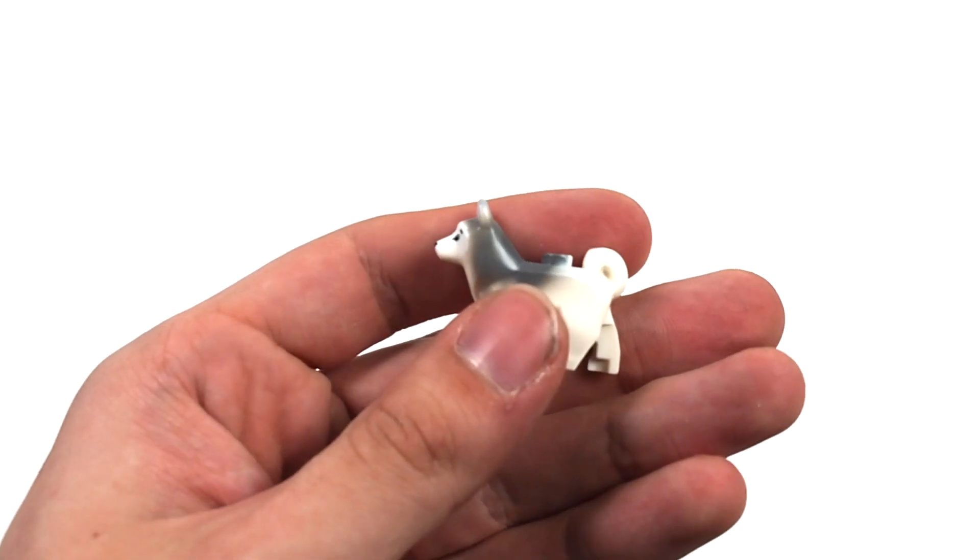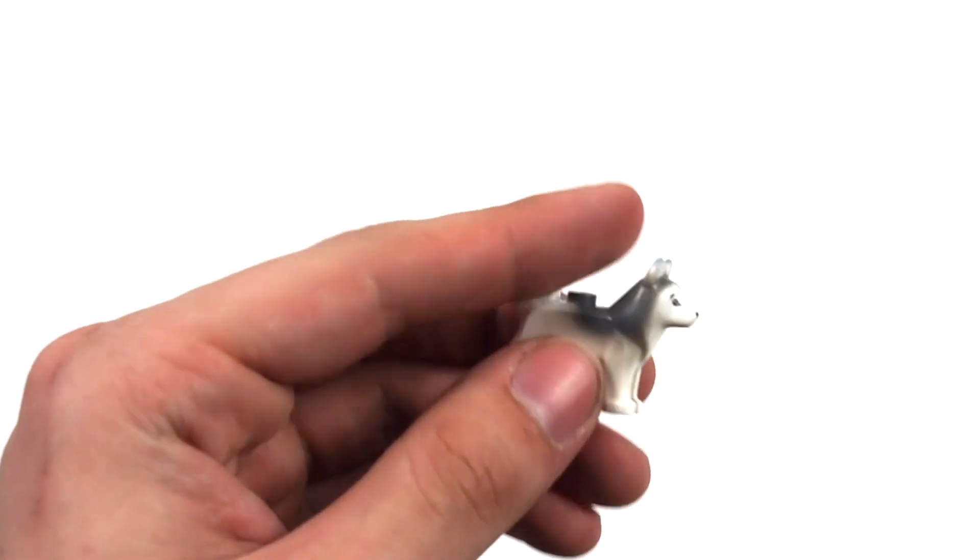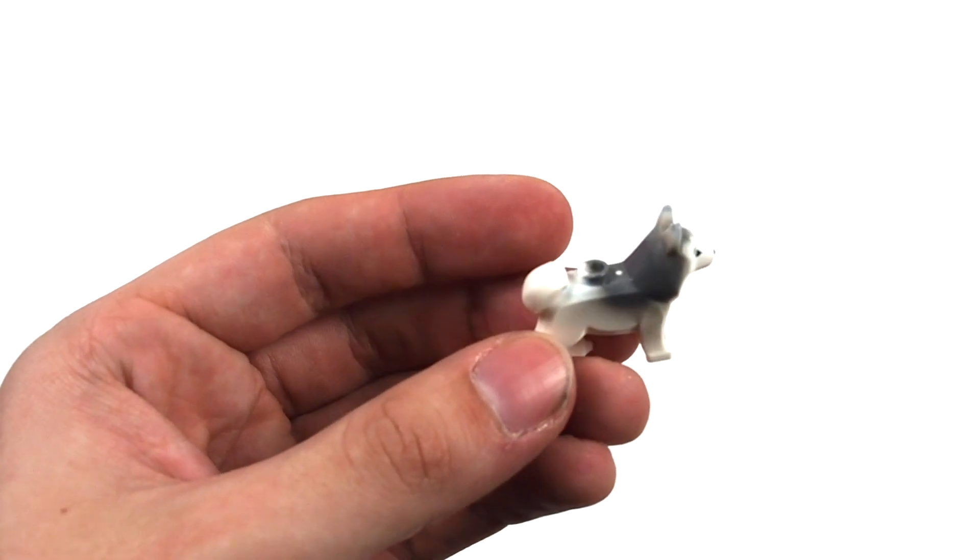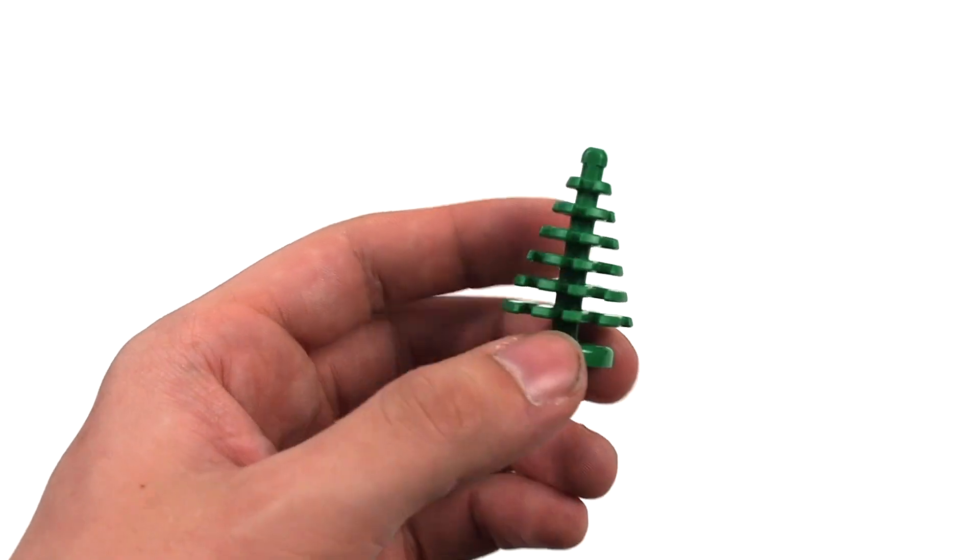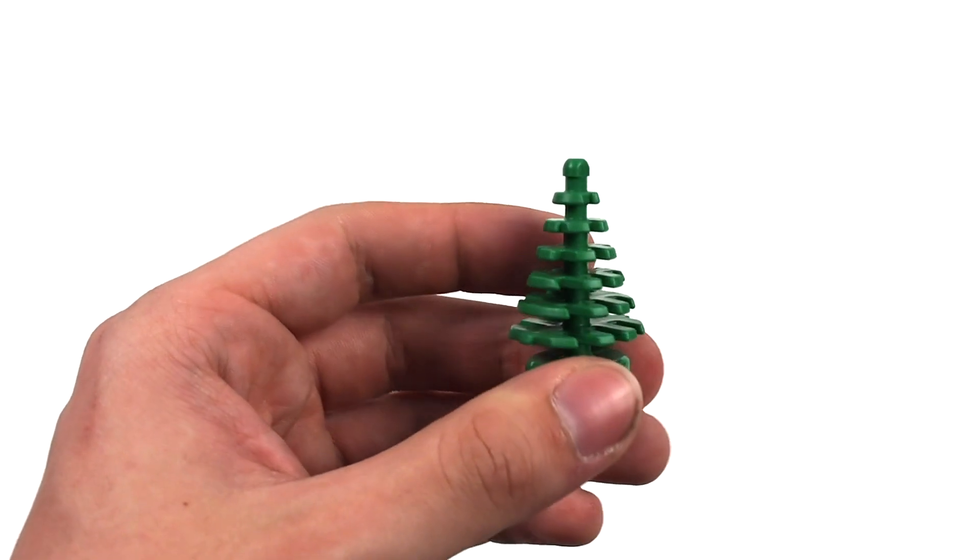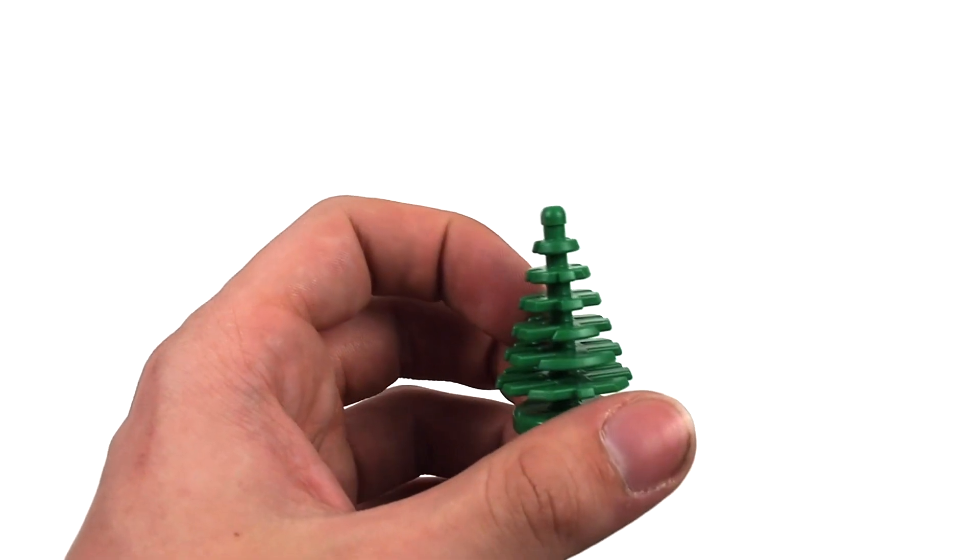As I mentioned, this set also comes with a husky and it is the ultra standard husky print that has existed for quite some time now, so nothing special about him at all. We also get a tree accessory piece, which you've seen a million times. This is a classic LEGO piece but it's always nice to get trees because they're very versatile for displays.